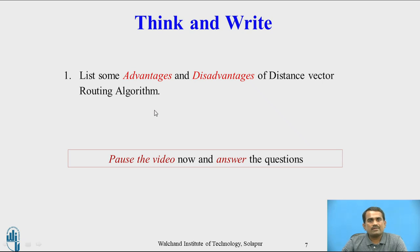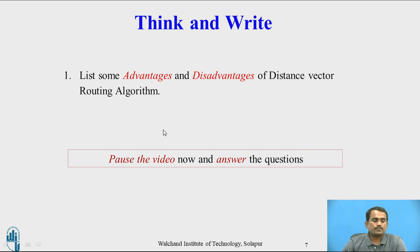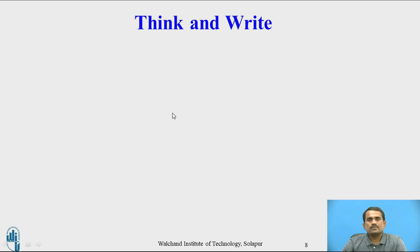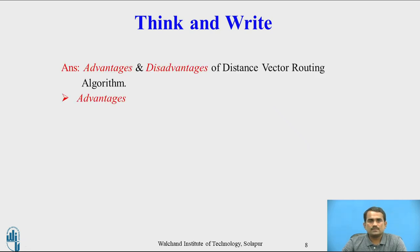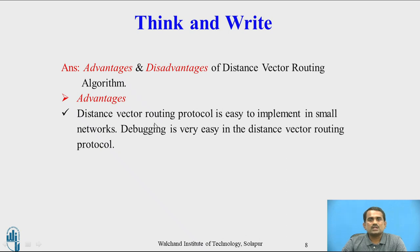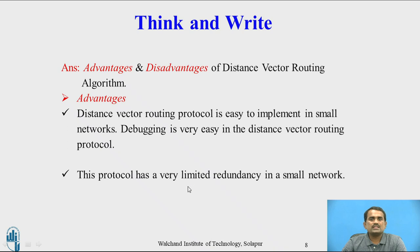One question to consider: list some advantages and disadvantages of the distance vector routing algorithm. Pause the video and answer the given question. Now, the advantages of the distance vector routing algorithm: it is easy to implement in a small network, debugging is very easy in the distance vector routing protocol, and this protocol has very limited complexity in a small network.